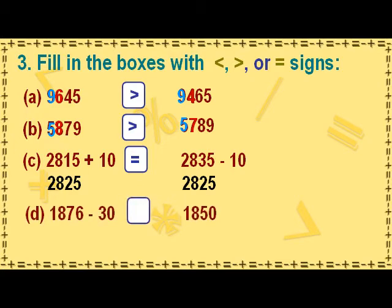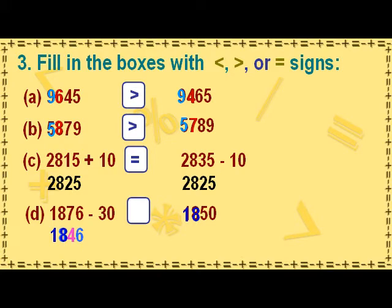The first number becomes 1846 when we subtract 30 from 1876. Now let us compare the first number 1846 and the second number 1850. The digits 1 and 8 have the same place value in both numbers. The next digit 4 in the tens place of the first number is less than the digit 5 in the tens place of the second number. Hence, the first number is less than the second number, so we put the less than sign after the first number.